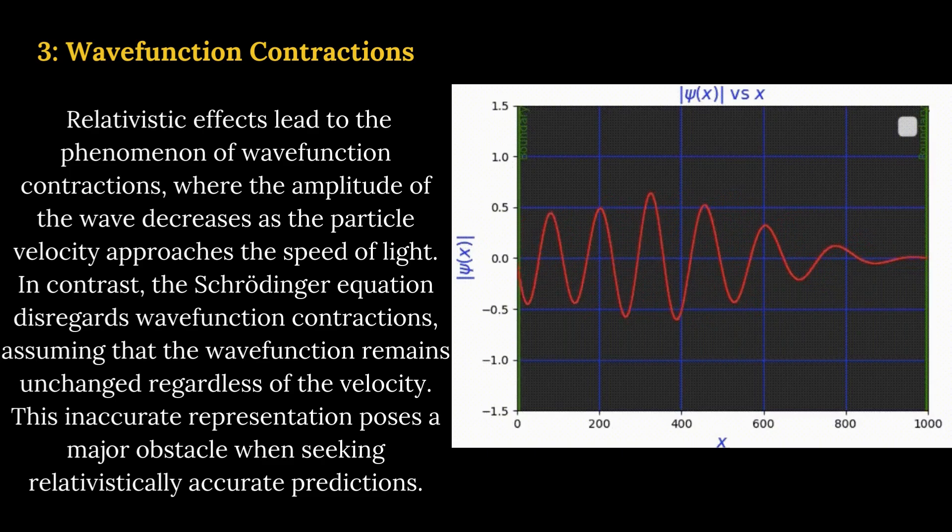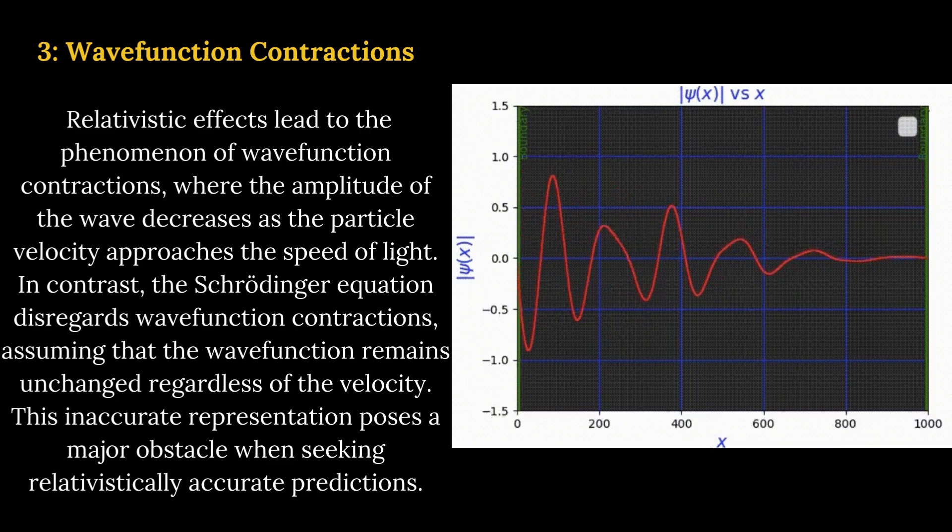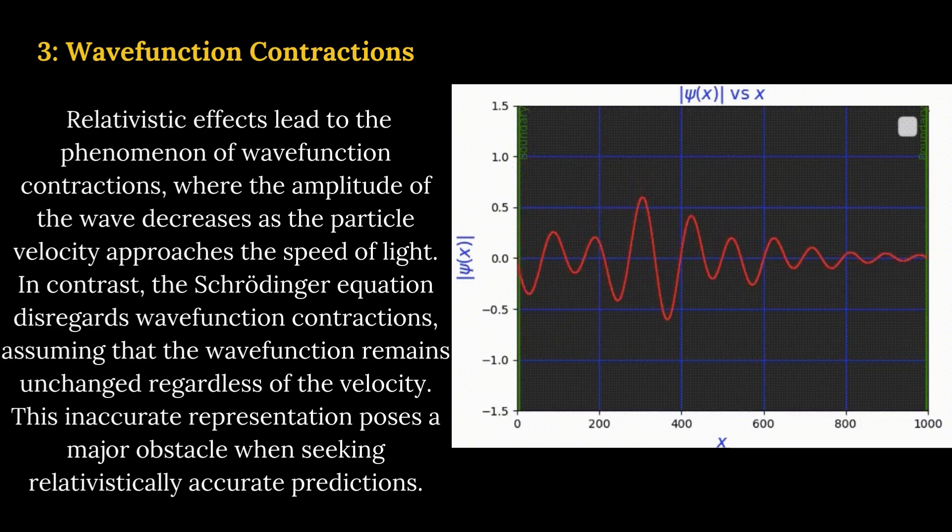In contrast, the Schrodinger equation disregards wave function contractions, assuming that the wave function remains unchanged regardless of the velocity. This inaccurate representation poses a major obstacle when seeking relativistically accurate predictions.